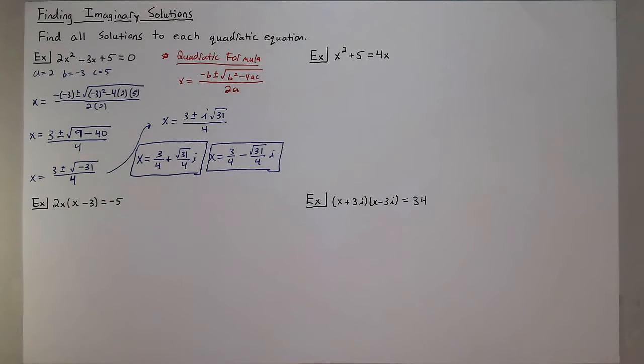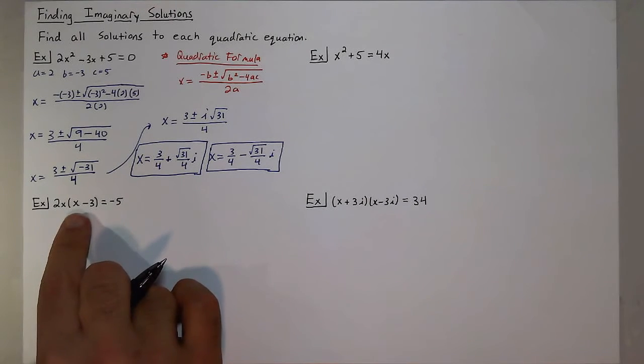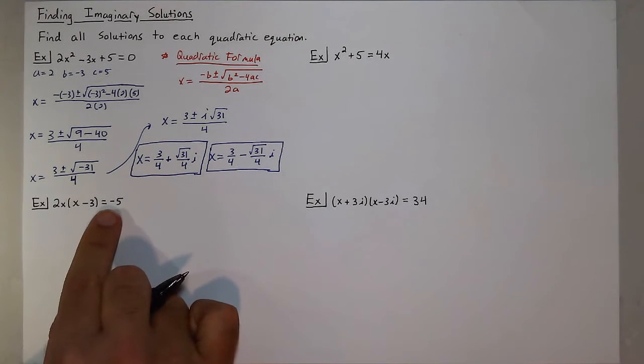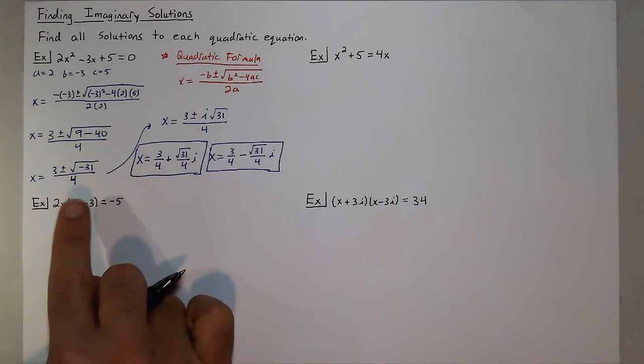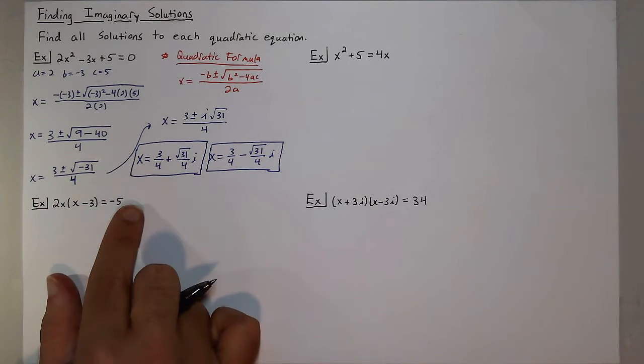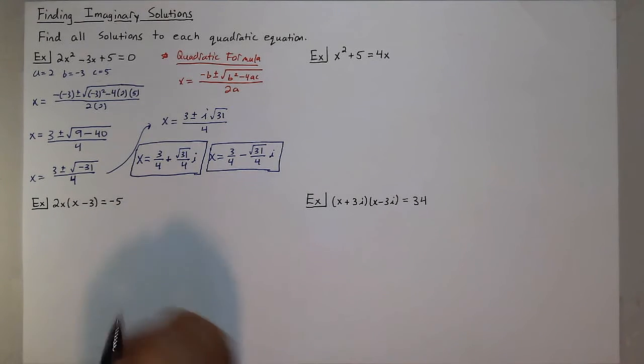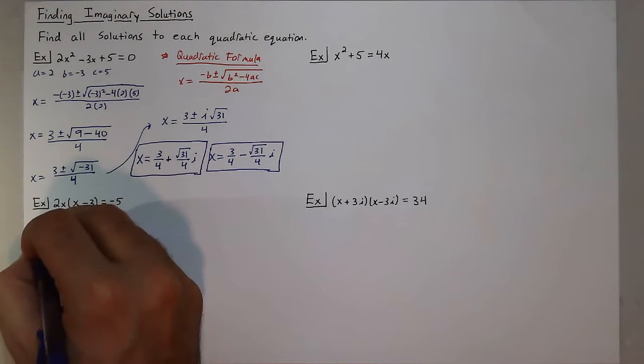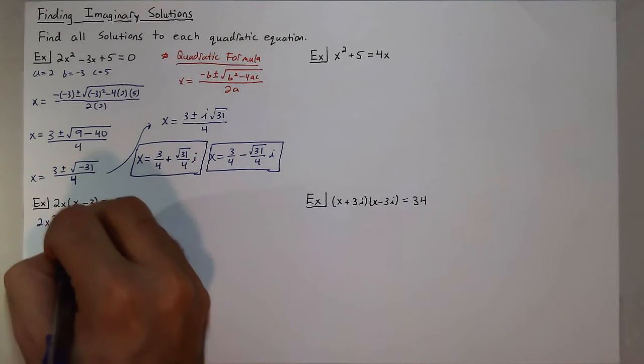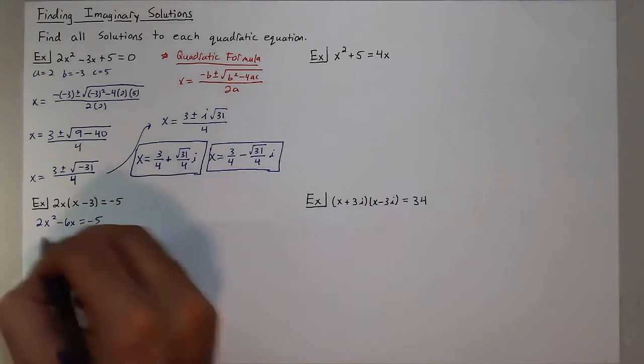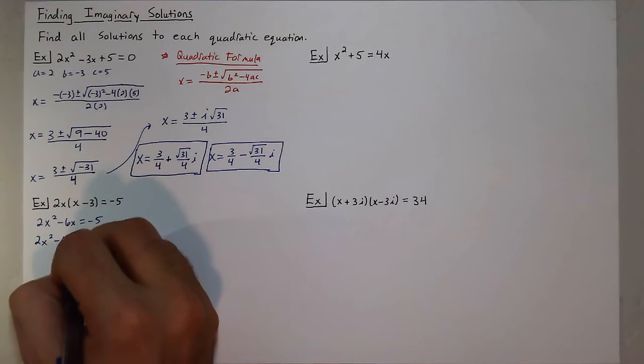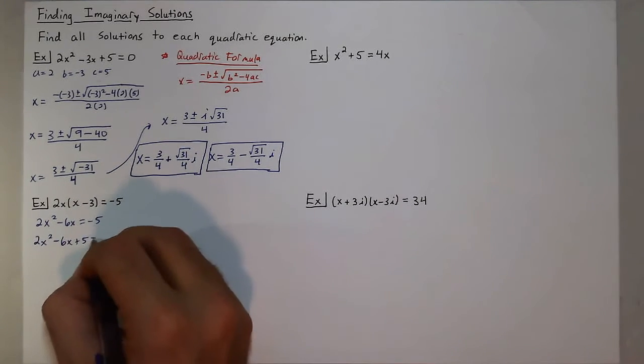So let's look at this next example: 2x(x - 3) = -5. Be very careful. When you see two factors being multiplied, unless they're equal to 0, we can't just set them equal to the number on the other side. So we need to actually distribute the 2x, so we get 2x² - 6x = -5, and then add 5 to both sides so we have it equal to 0.